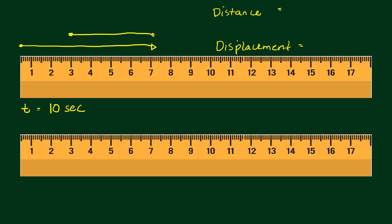What would be the distance? First, it covered 7 centimeters, and then from 7 up to 3, that is 4 cm. So therefore, your distance is 7 plus 4 centimeters, so that's 11 centimeters. Whereas for your displacement, you only started here — this is your starting point and this is your end point. The shortest distance from start to end is 3 centimeters. So displacement is equal to 3 centimeters.